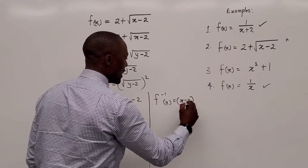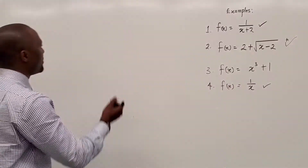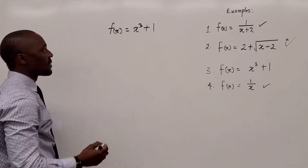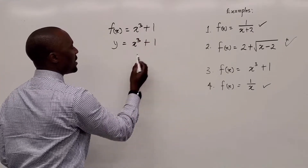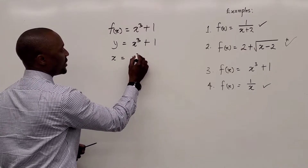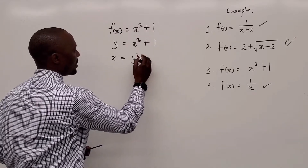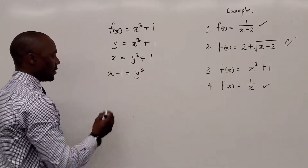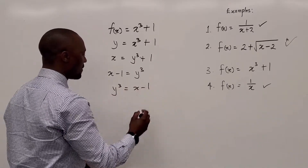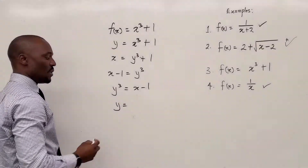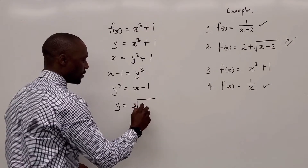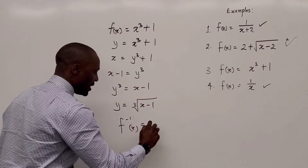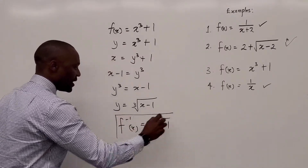Let's go to f of x equals x cubed plus 1 — that will be our final question. Do the replacement: y equals x cubed plus 1. Now switch x and y: x equals y cubed plus 1. Isolate y: subtract 1 from both sides, giving x minus 1 equals y cubed. Take the cube root of both sides, so y equals the cube root of x minus 1. The inverse function of x is the cube root of x minus 1. You have found the inverse function.